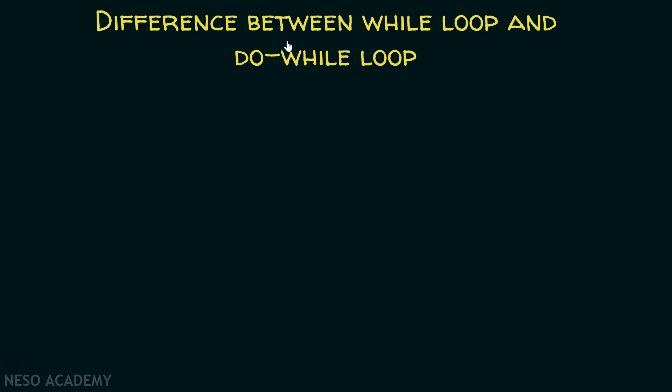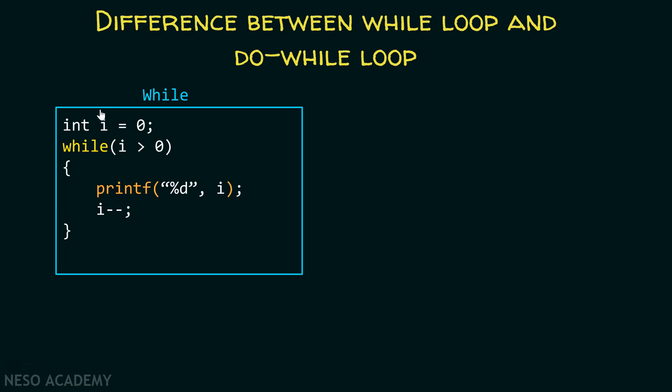What is the difference between while loop and do while loop? In this program using a while loop, I declared a variable i and assigned it a value 0. I simply check the condition: is i greater than 0 or not? If i is greater than 0, we evaluate the body of the loop; otherwise we exit. Here, 0 is not greater than 0, so we come outside the loop and the output is no output.